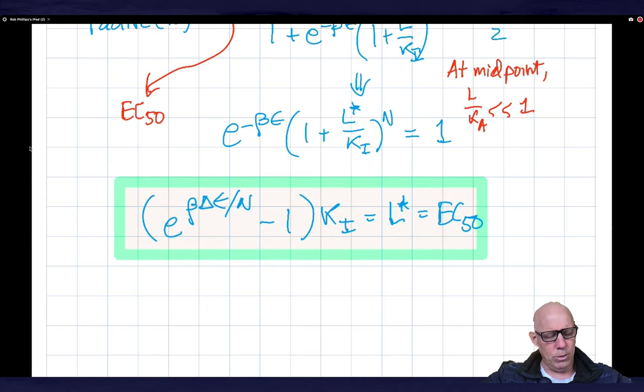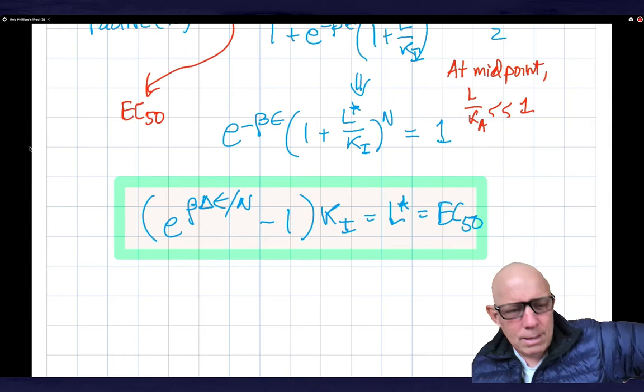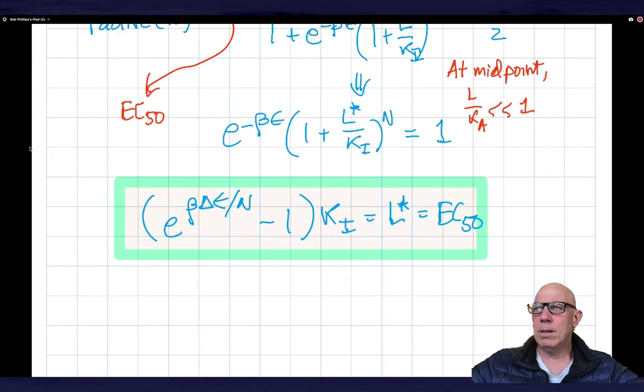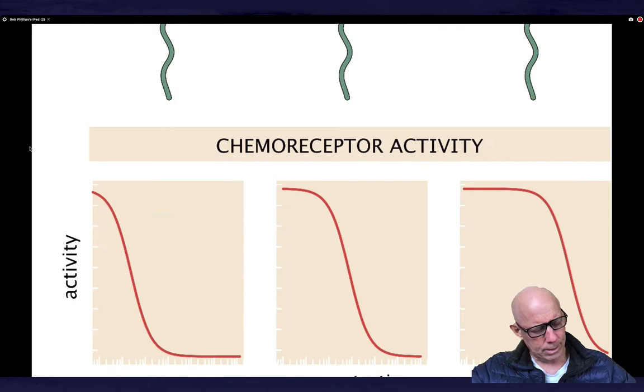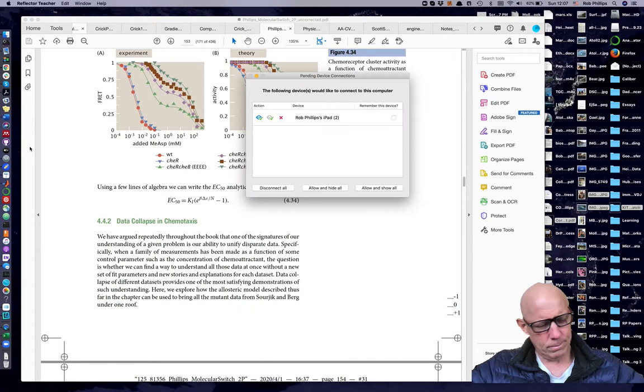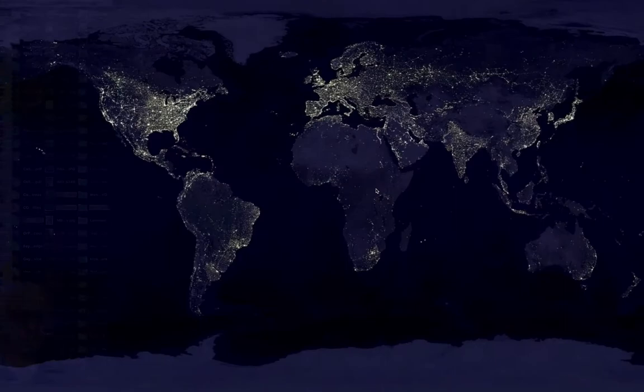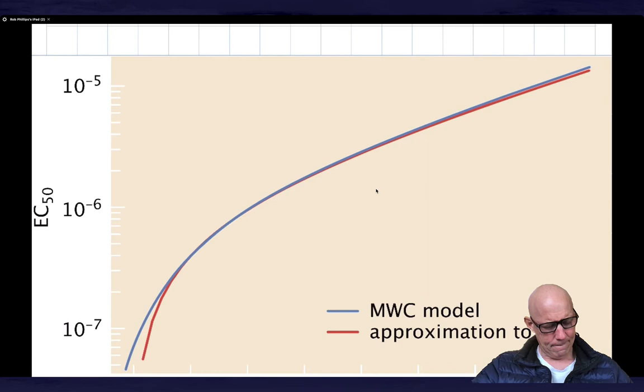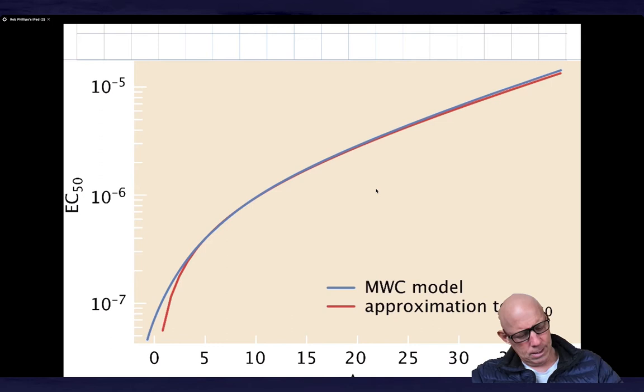So what it says is that the way that we shift the EC50 is by tuning delta epsilon. That's the key point. Shift EC50 by tuning delta epsilon. So the hypothesis that I'm advancing, which isn't my hypothesis, but it's the hypothesis that was advanced by the theory groups that worked on this, is that the shift parameter is the EC50.